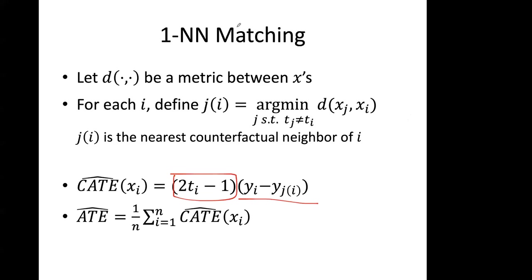One advantage of matching is interpretability: if asked why a treatment works for John, you can say 'the nearest neighbor to John was Anna, who took a different treatment — here's what happened for Anna.' A clinician can then scrutinize the match and reject it if the two individuals are clearly incomparable (e.g., gender-specific treatments). You can also imagine weighting nearest neighbors by distance, and consistent estimators of ATE can be derived through such ideas. There are hundreds of papers on variants of this.